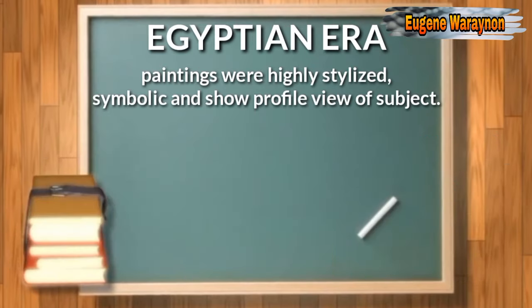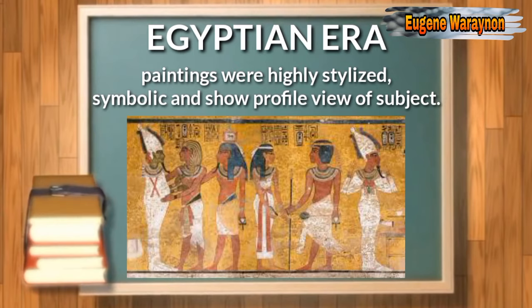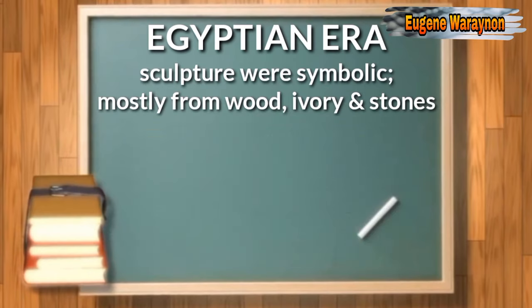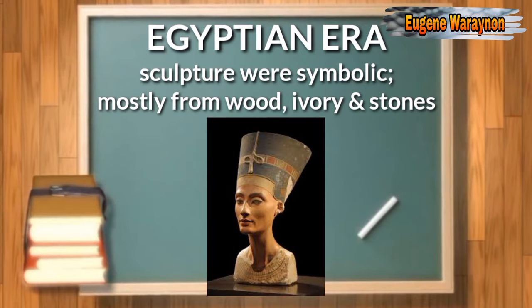Egyptian paintings were highly stylized, symbolic, and show a profile view of an animal or a person. Egyptian era sculptures include symbolic elements such as forms, hieroglyphics, relative size, location, materials, color, actions, and gestures were widely used. Most common materials used were wood, ivory, and stones.